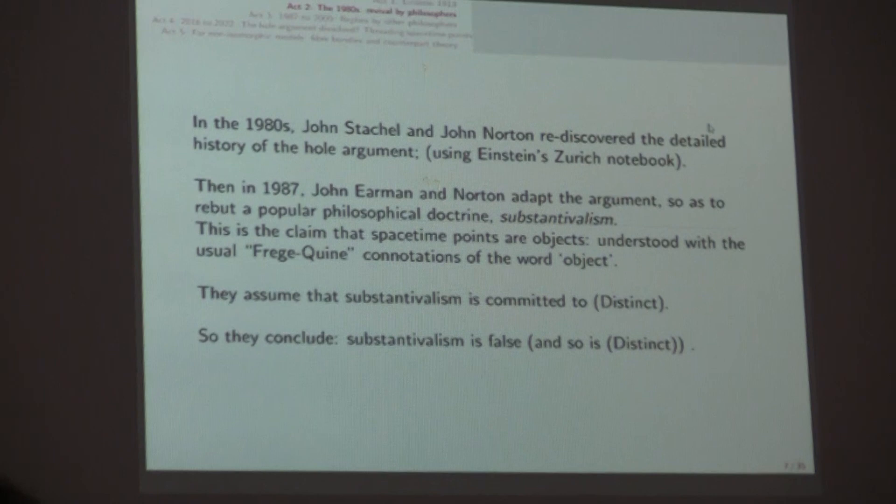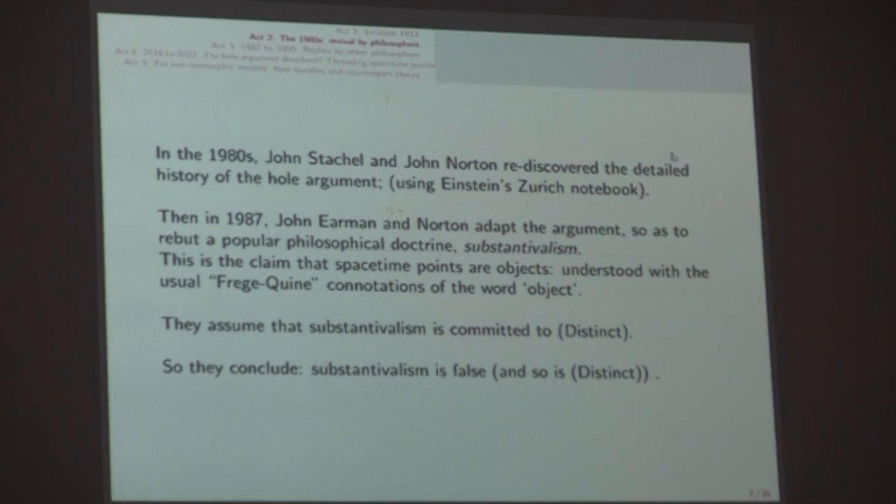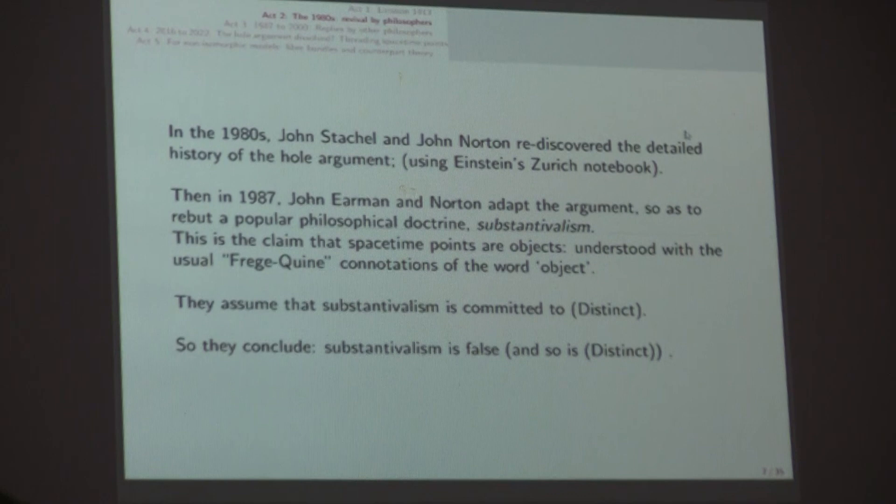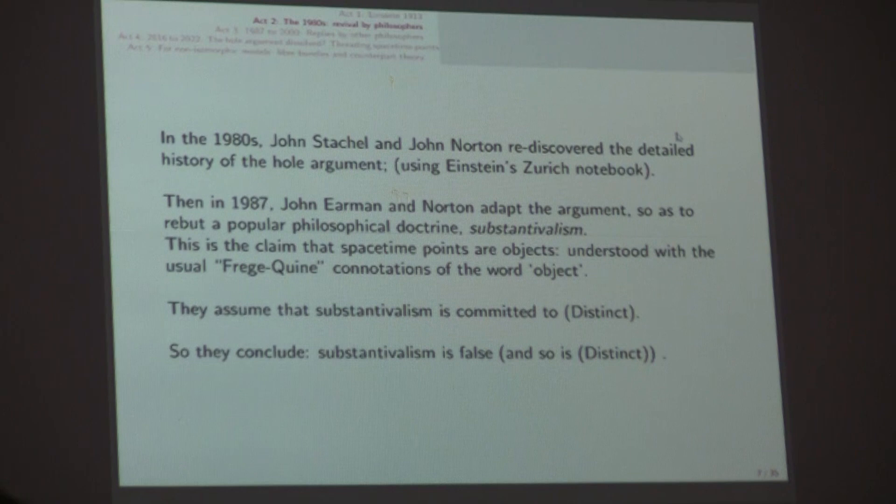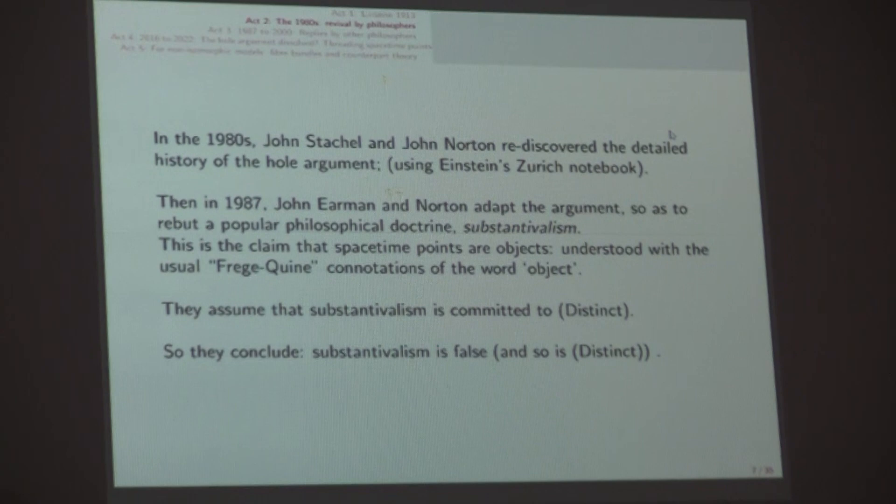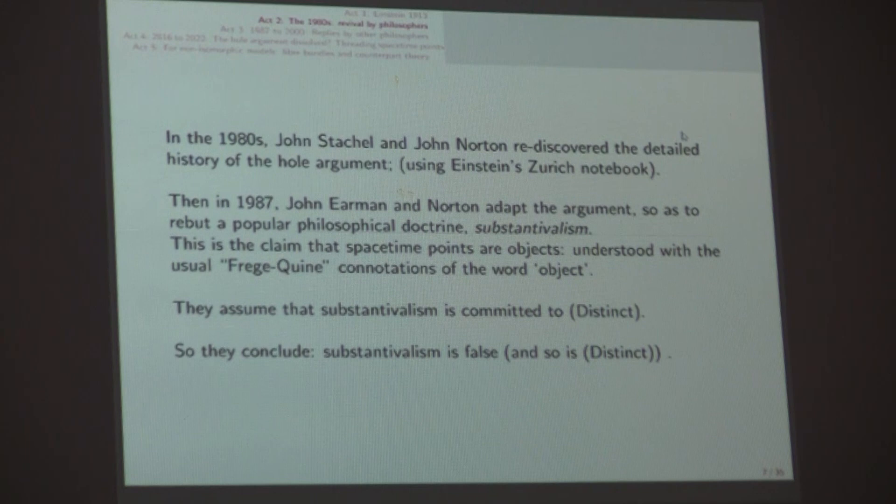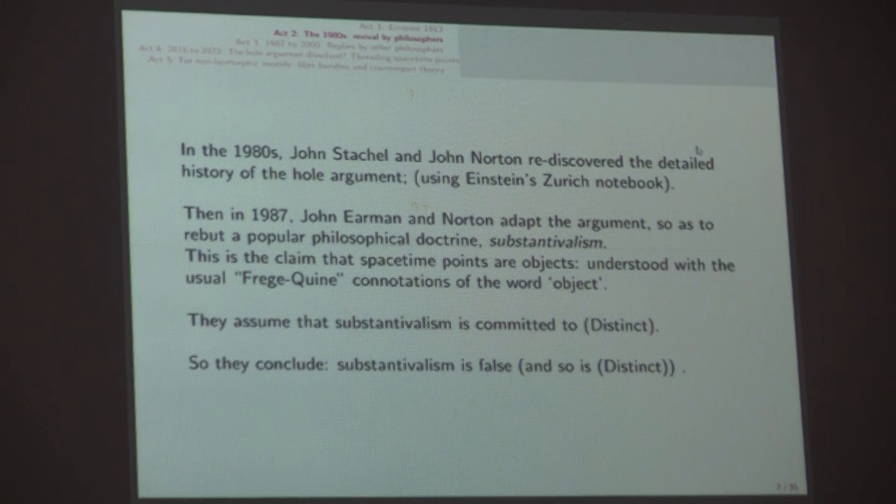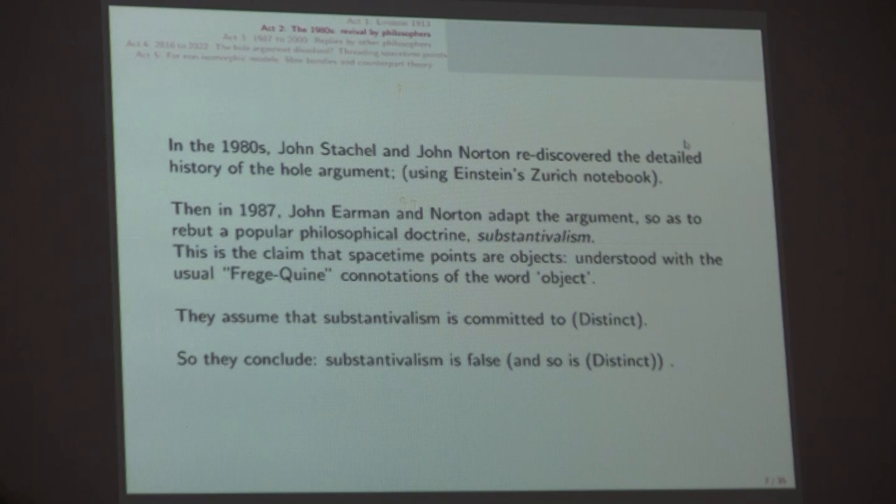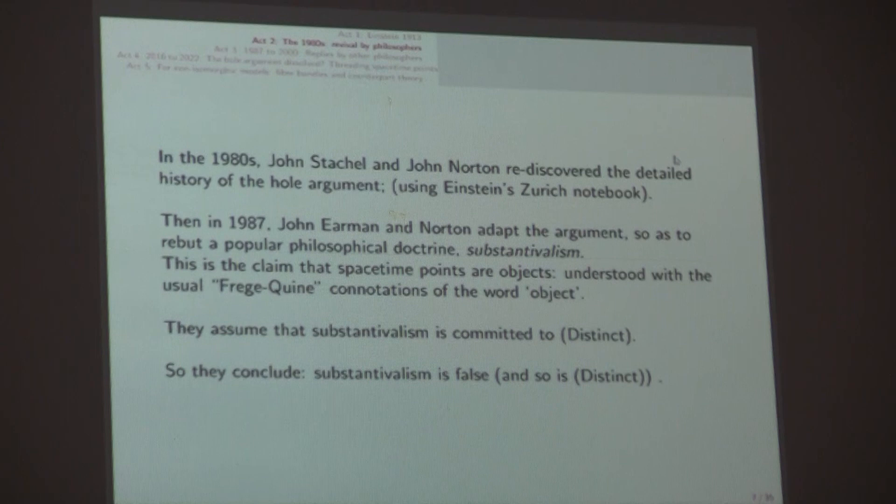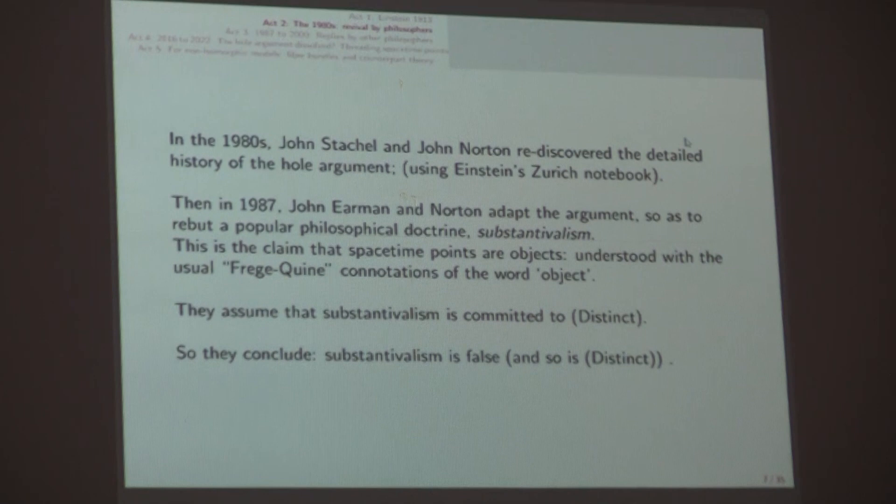These two models represent different distributions of spacetemporal relations encoded by the metric and different distributions of material properties encoded in matter fields over a common base spacetime manifold. And inside the dotted circle, which is my capital H, which there's a non-identity drag-on. Back in the 1980s, Stachel and Norton rediscovered the detailed history using Einstein's notebook from his Zurich days. In 1987, Earman and Norton adapted this argument to say that substantivalism was wrong.